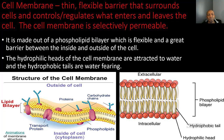The cell membrane is made out of a phospholipid bilayer, which is flexible and a great barrier between the inside and outside of the cell. Here's that lipid bilayer — they call it a bilayer because it has two layers: an outer layer and an inner layer. You also notice transport proteins and other proteins embedded in this phospholipid bilayer that help get things across the cell membrane. Carbohydrate chains are also present and help provide energy.